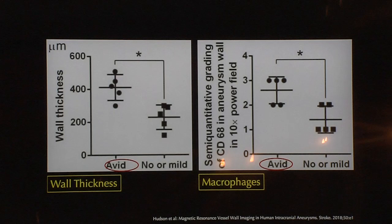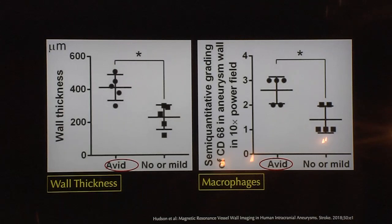One of the interesting findings from this small case series is that we confirmed aneurysm enhancement correlates with inflammation. Our group, along with groups from Japan and other parts of the world, confirmed through histological correlation that when you see enhancement, there is evidence of inflammation with presence of macrophages and T cells. We also found that wall thickness changed — there was more enhancement in the part of the wall that was thicker, probably because of atherosclerotic changes.